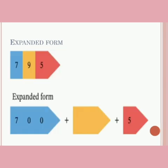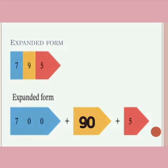Let's write the missing number and complete the expanded form. The expanded form of the number 795 is 700 plus 90 plus 5.